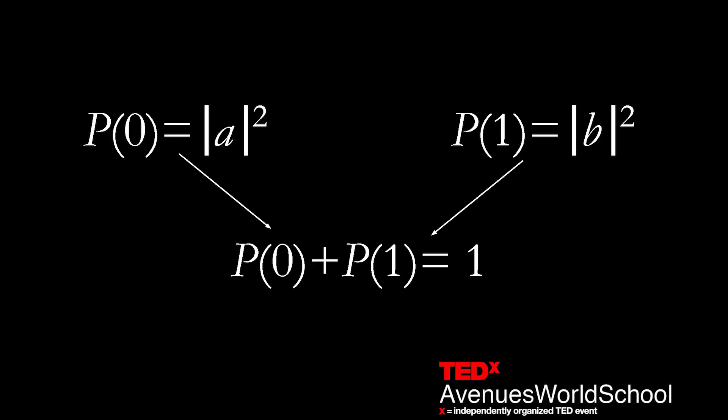And finally, 4. The probability that that qubit will collapse to either the zero or one states can be described by equations.